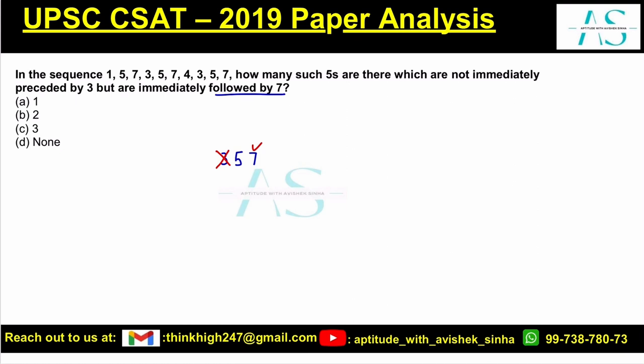So if you look at this 5, 7 is there and 3 is not here, so we can take this as 1.